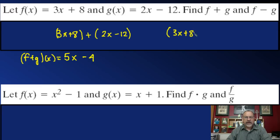I would suggest you use parentheses here to make sure you realize that this negative sign has to be distributed to both terms. This is going to be 3x plus 8, and then we're going to have minus 2x, and then a minus, this negative is going to be plus 12.